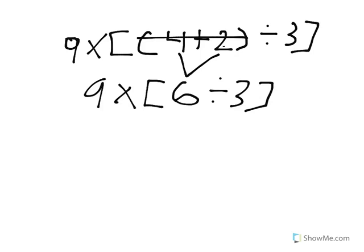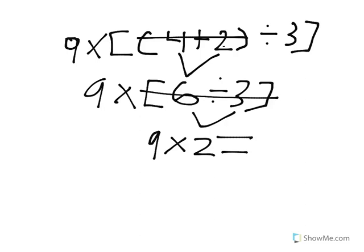Next, you do what is inside the brackets. So 6 divided by 3 is 2, and you're all done with that. So you cross that out. Then you bring everything else down.